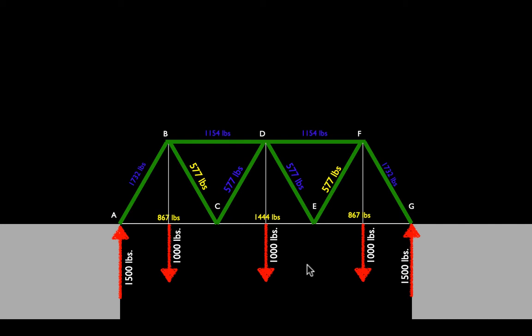What we found is that there's a very predictable pattern to how these loads get distributed throughout the members. All of the loads are going to be axial — nothing in a truss is going to go into bending. The deck will between the nodes, but if we zoom out and think about the truss itself, remember that all of the cords will be either in tension or in compression. There's a very predictable and kind of beautiful pattern to how all of this gets resolved.